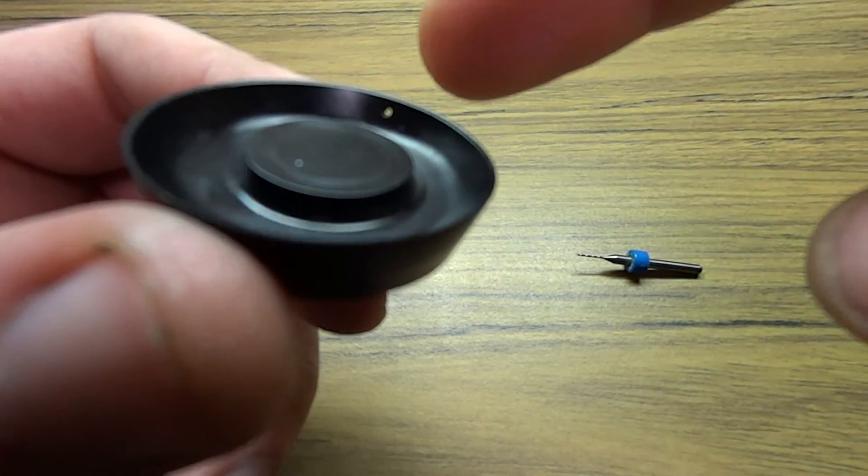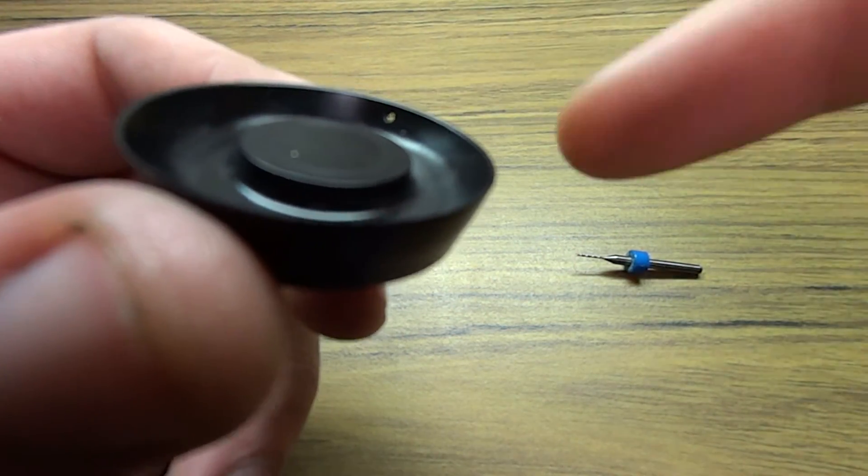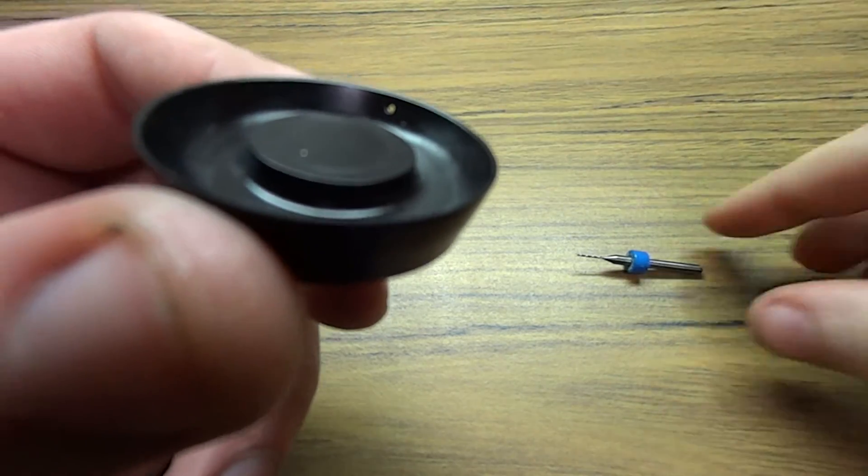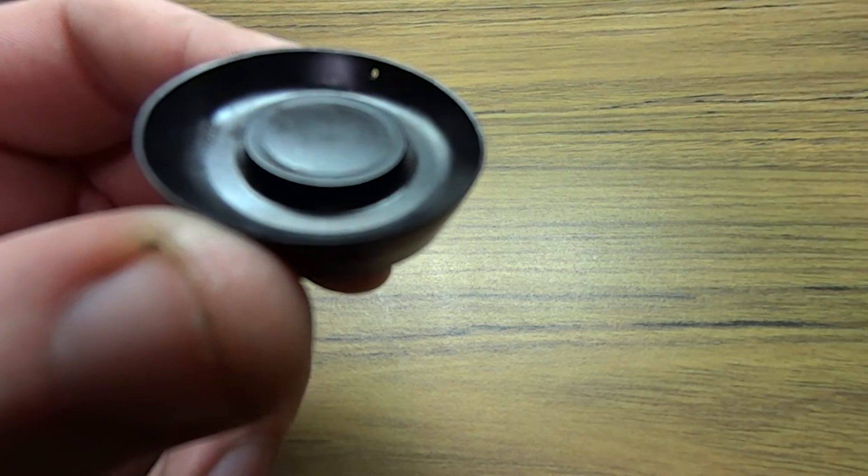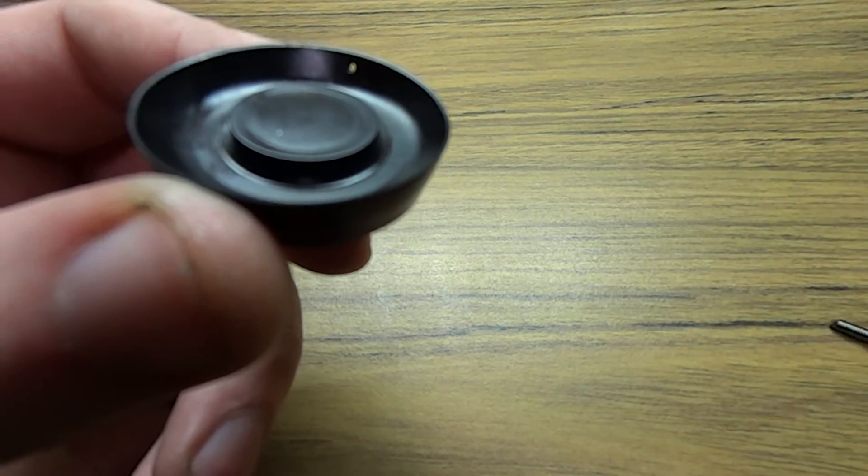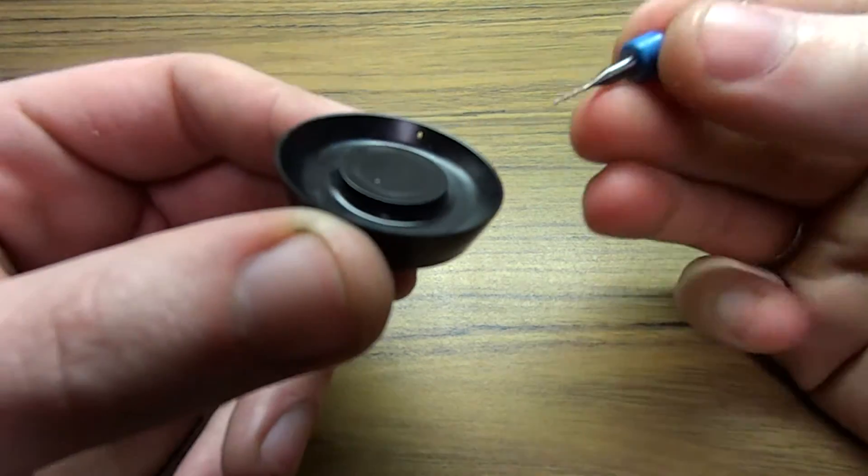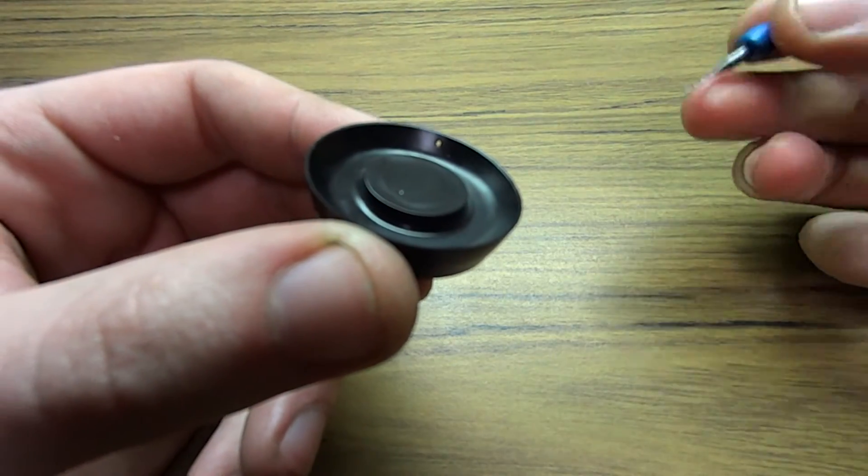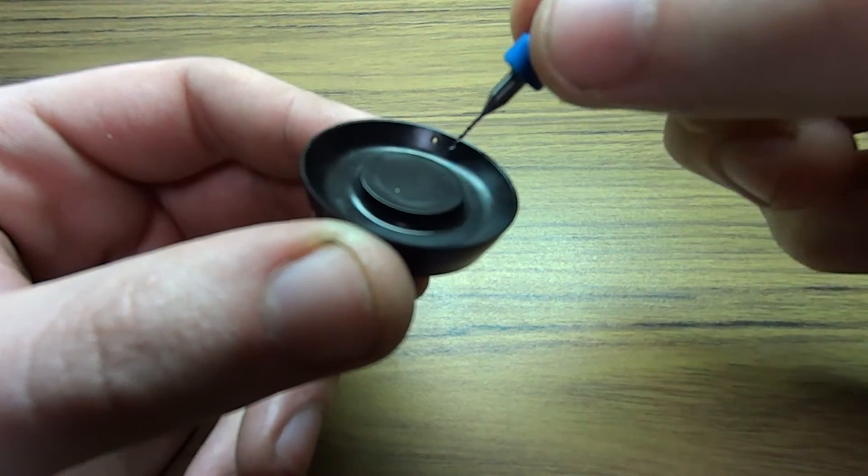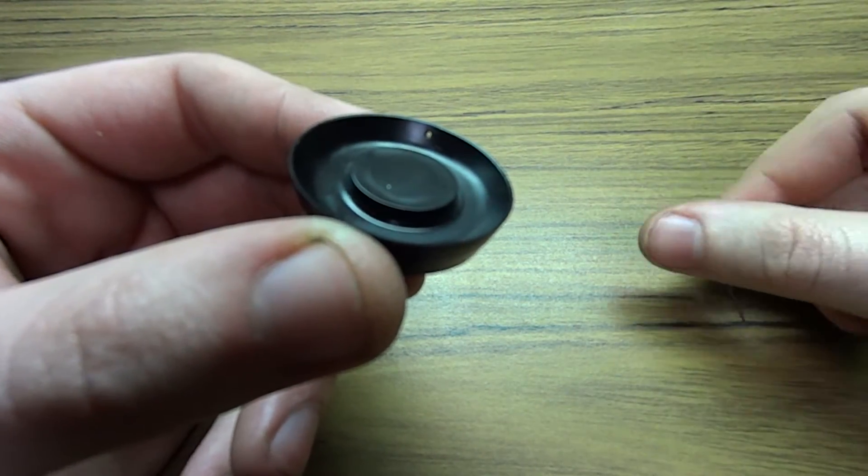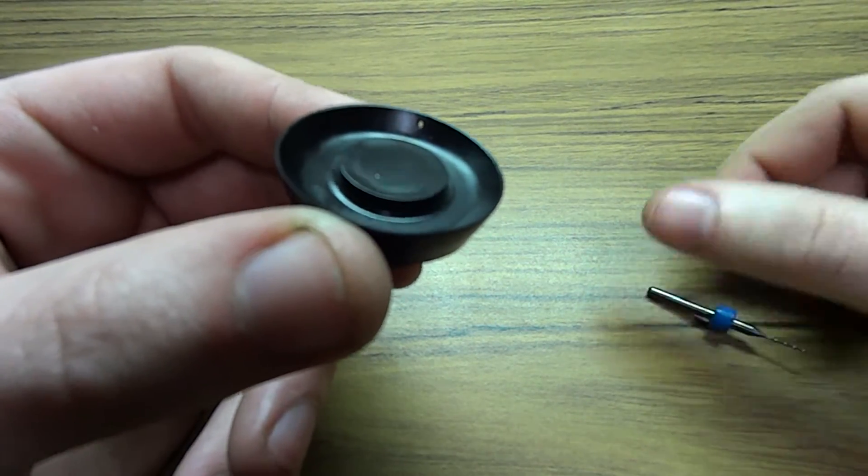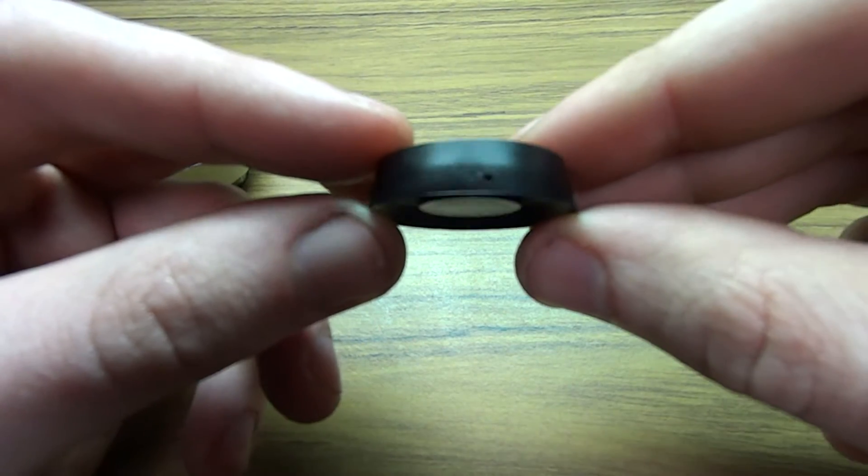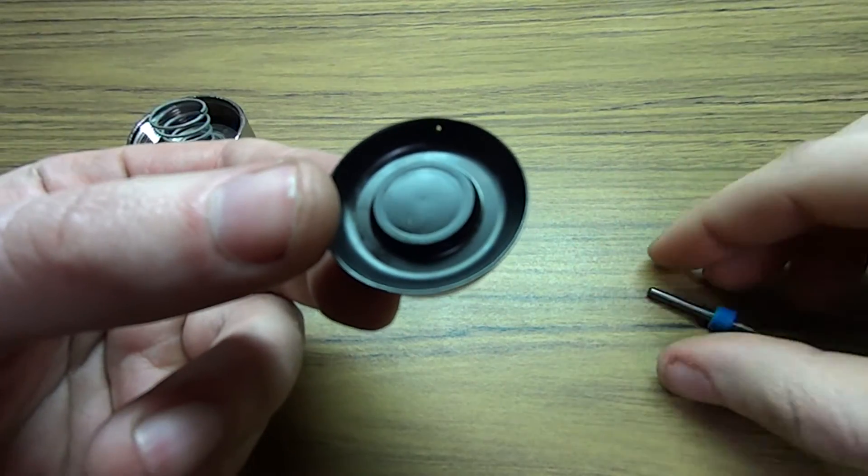You want it fairly close to the edge. I would say about halfway between the edge and the base of the diaphragm there. Too close to the edge and you have a chance of tearing, too close to the base and it might not work as well. So yeah there's the hole. As you can see obviously it's a hole that goes all the way through.